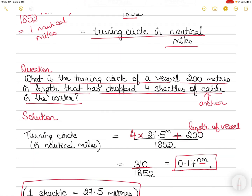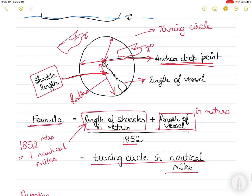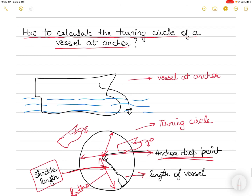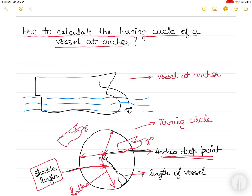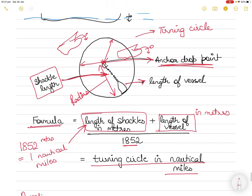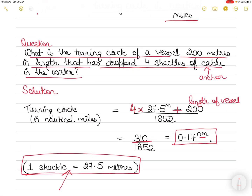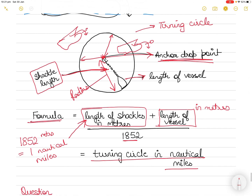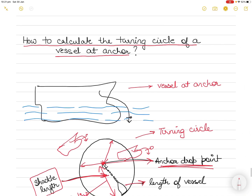Masters often ask junior officers to draw the turning circle of a vessel at anchor after dropping anchor — this is how it's done. Second officers, third officers, and chief officers must know how to do this, and as captain you must know it as well, as it keeps your ship safe at anchorage. I hope this was clear; I'll cover more intricate aspects of anchoring in future videos.